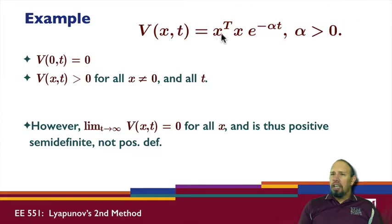So let's look at this example of a decrescent function. There are more examples in the practice problems. Notice I have x transpose x times e to the minus alpha t, where alpha is positive. So we see that V of 0, when x is 0 and t is 0, and V of x is positive for all x non-zero and all t.